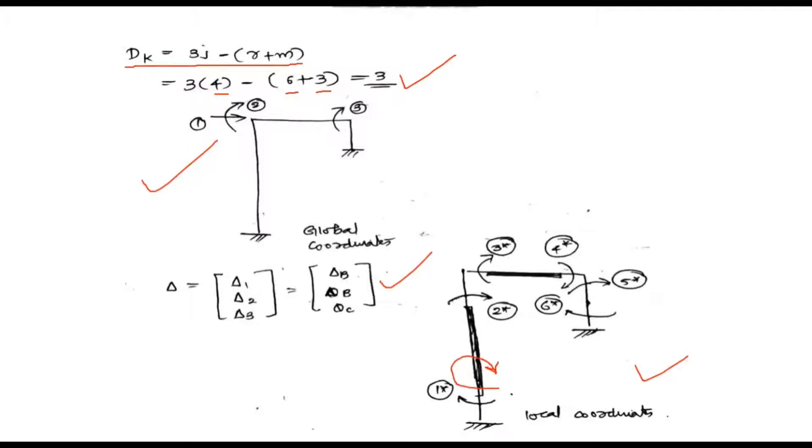For the member AB, we'll have the coordinates as 1 star, 2 star. For BC, we'll have 3 star, 4 star and for CD, we'll have 5 star, 6 star.